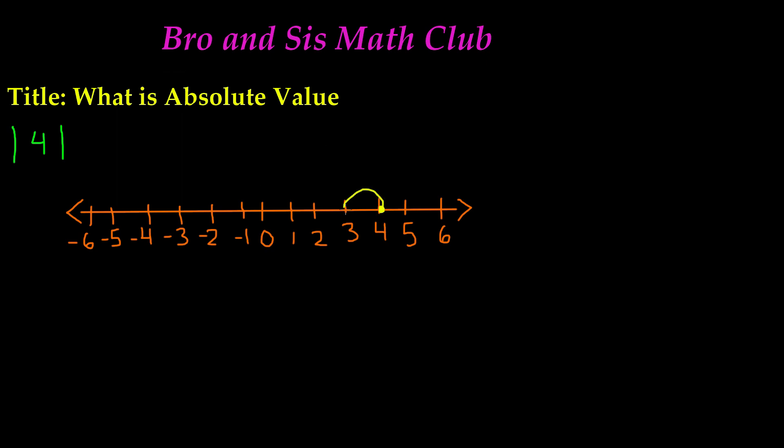So 1, 2, 3, 4. That means it is 4 spaces away from the number 0. So the absolute value of the number 4 is 4.